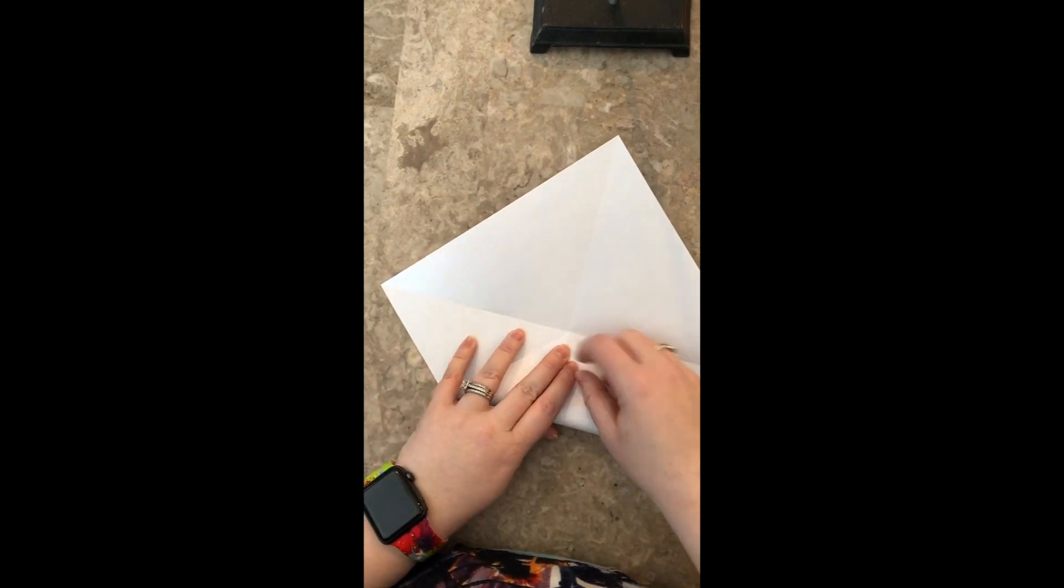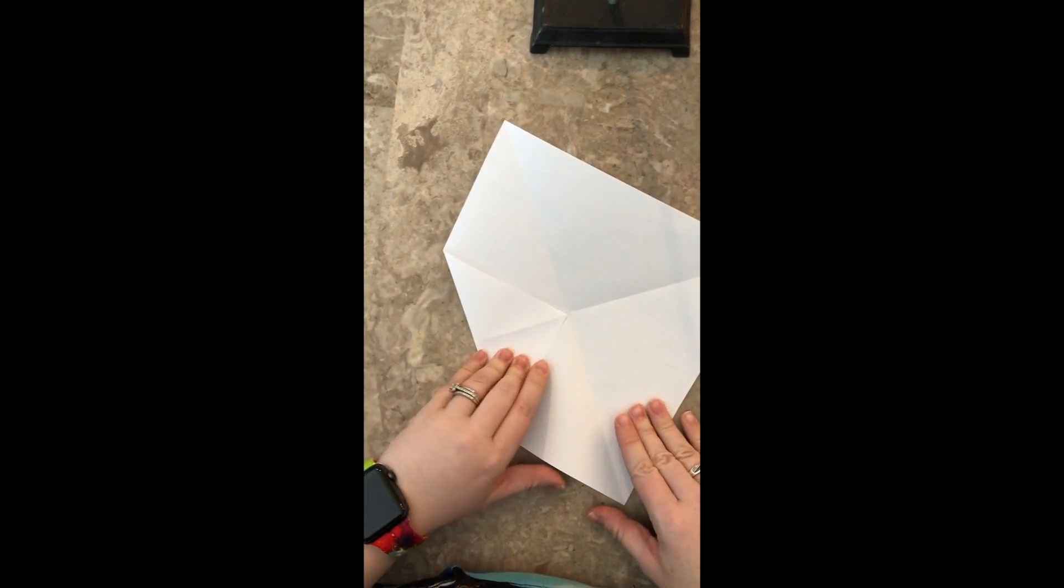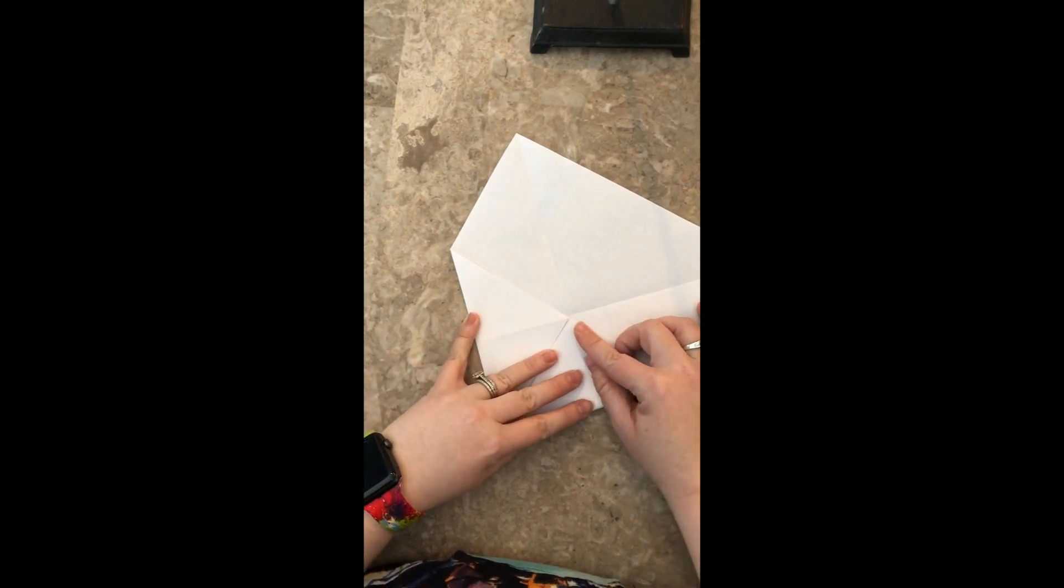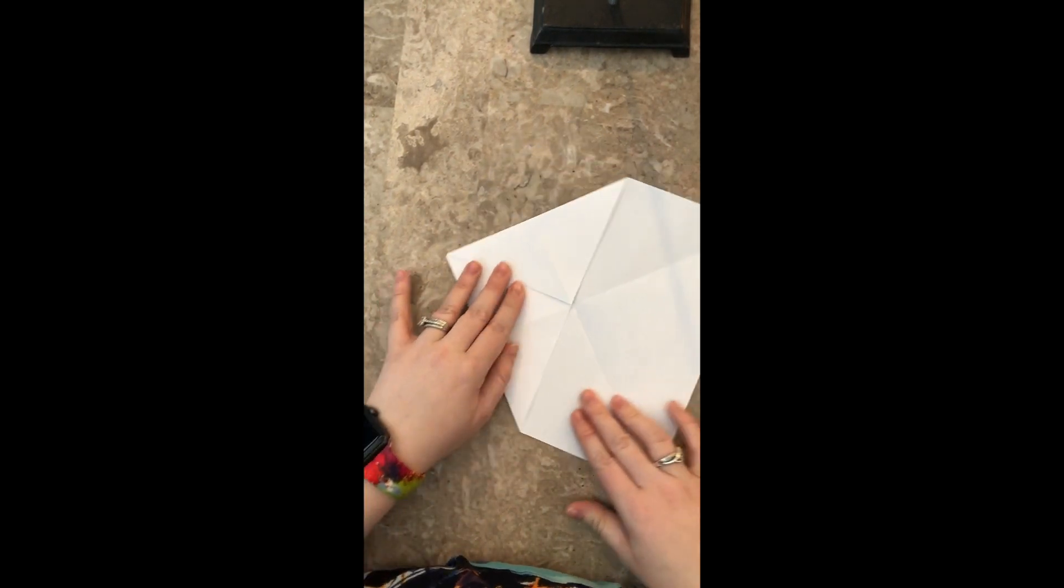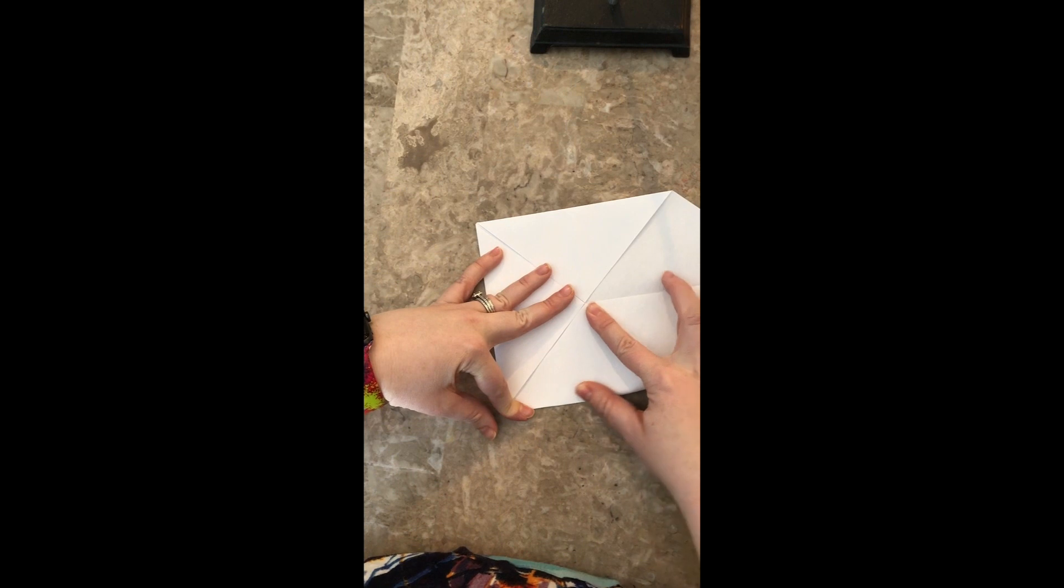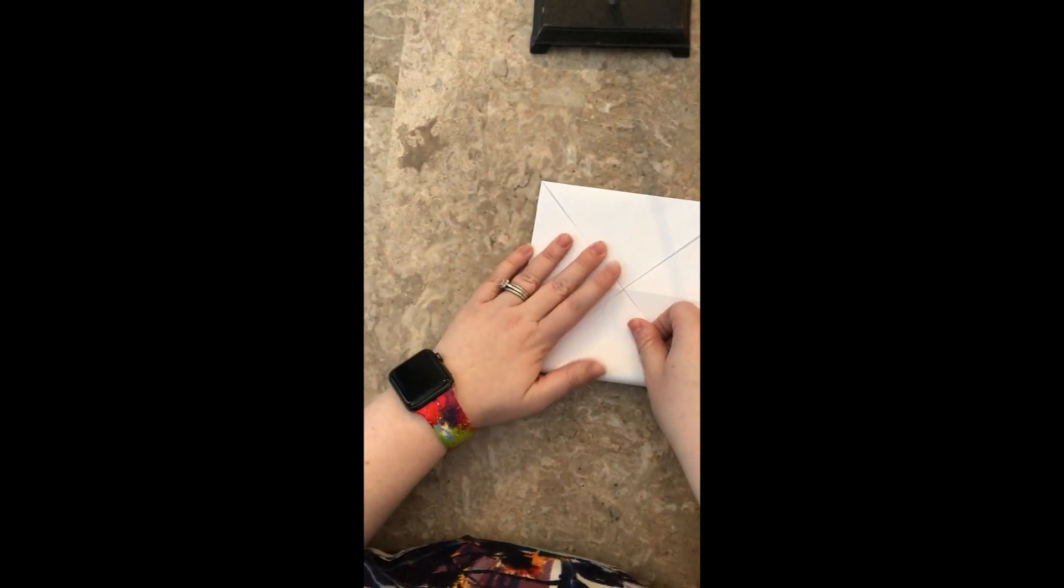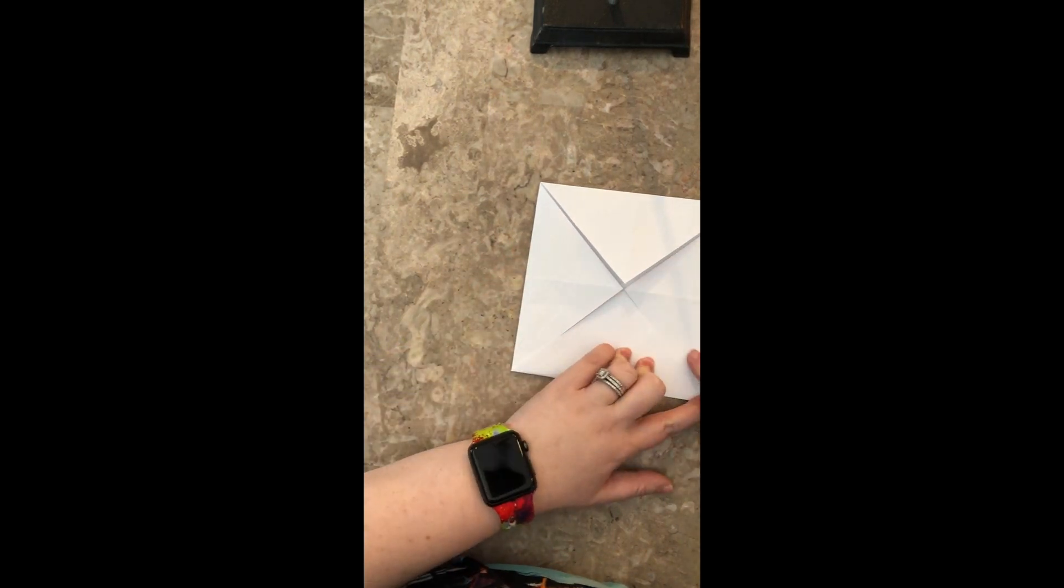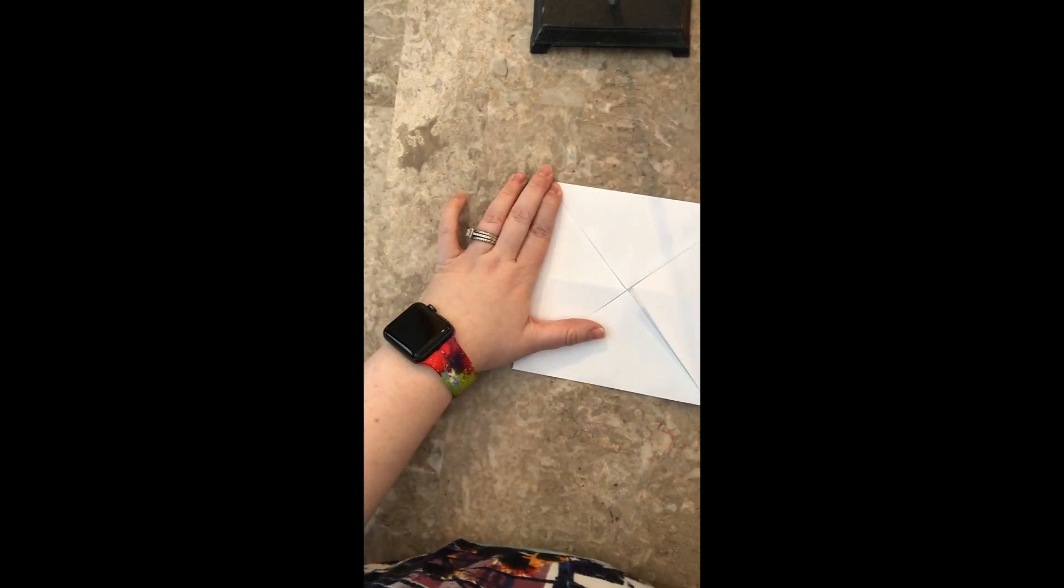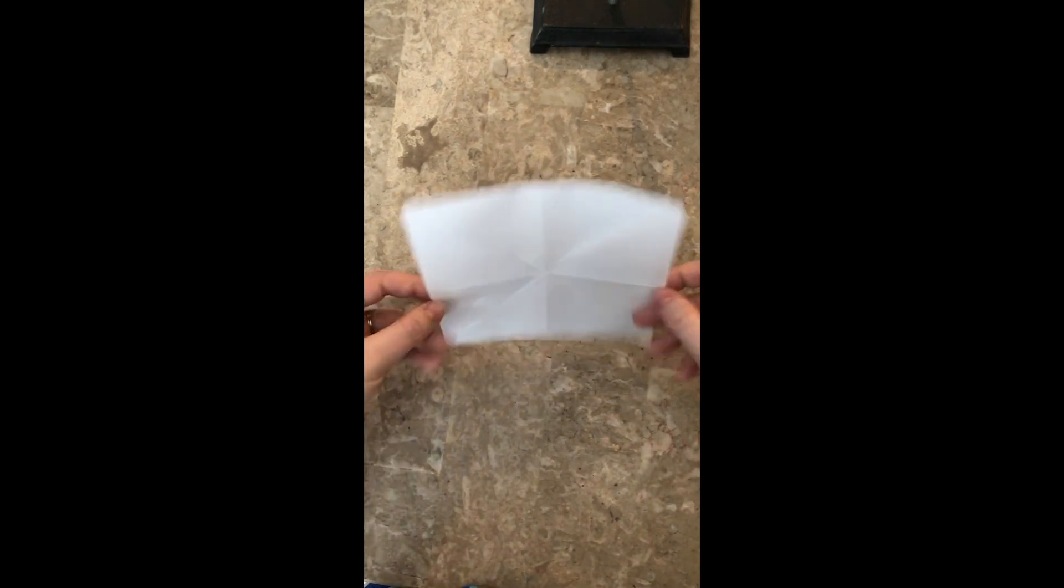Next, just like a fortune teller, each of the four corners need to be folded up to the exact center. Really make sure that your creases are all lined up. Once your four corners are folded up, double check that your edges are folded down really, really well.